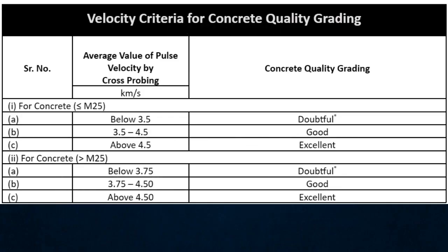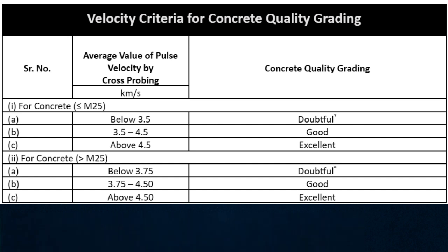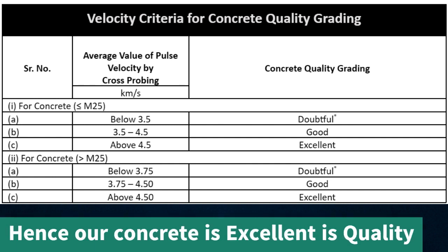We would then use the standard table provided in IS 516 Part 5, Section 1 for assessing the quality of concrete. It can be seen that the observed velocity is greater than 4.5 km per second, thus the quality of concrete is excellent.